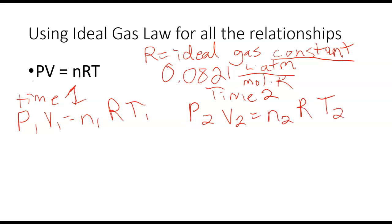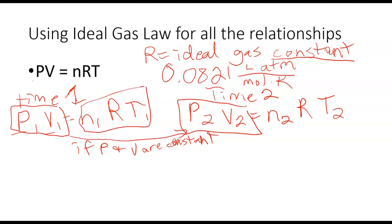Now this might seem like I haven't really gotten anywhere, but I can rewrite this equation in a variety of ways. So let's say that I know that my pressure and my volume are constant. If I keep my pressure and volume constant, then that would mean that P1 times V1 and P2 times V2 would be the same. So what that can allow me to do is to set this part of the equation as equal to this part of the equation.